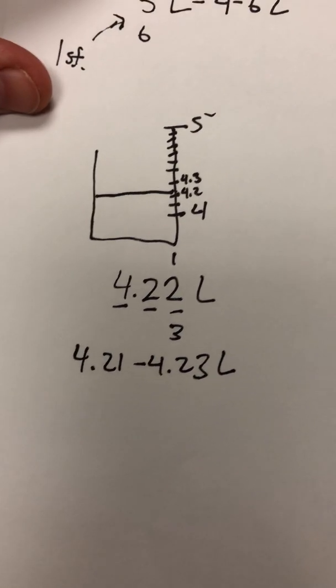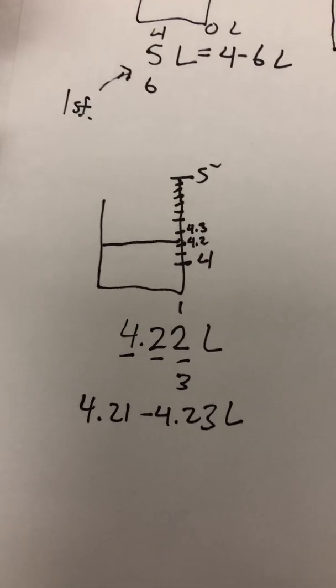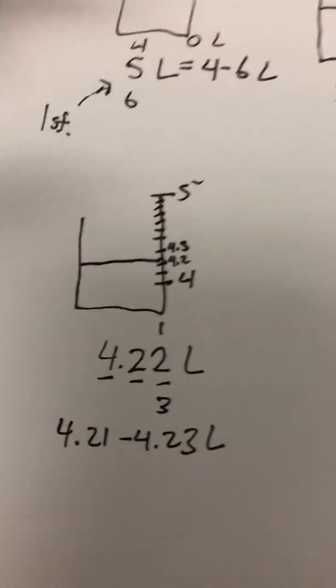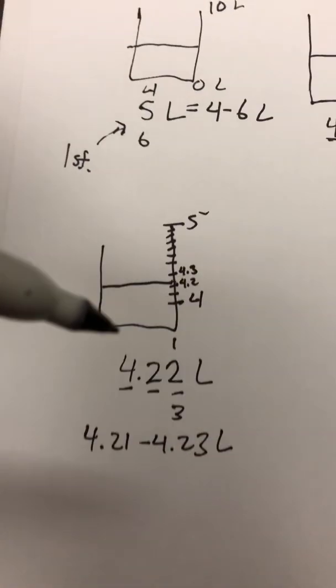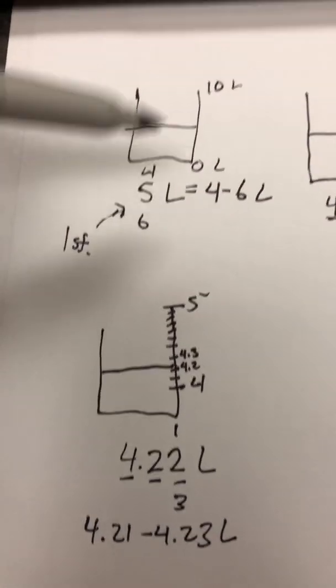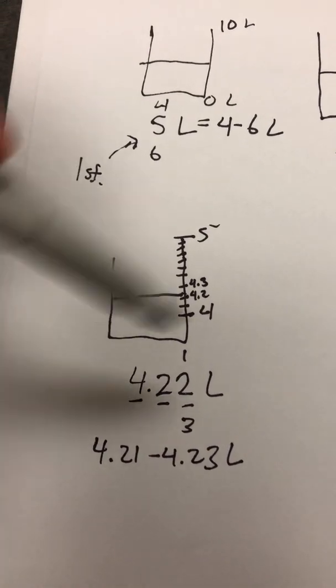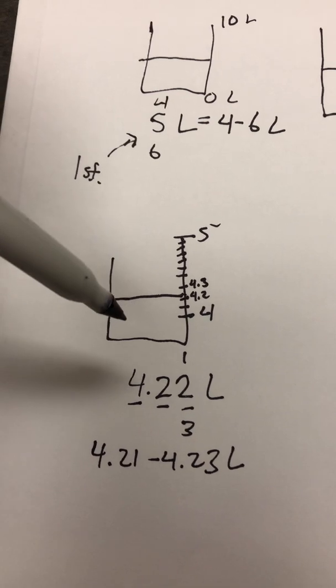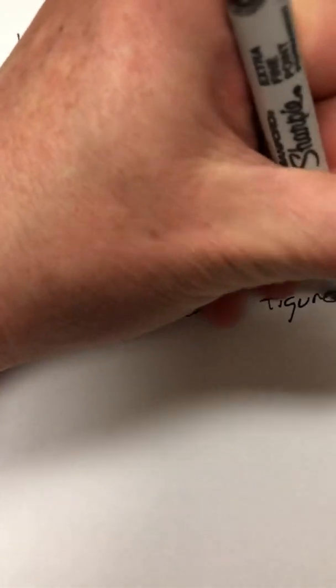If your life depended on it and you absolutely had to get some kind of medicine, and they said you need 4.22 liters of some medicine — which would be a whole lot of medicine — would you trust this one or this one? Would you rather have them measure 5 liters with something like this, or relatively accurately measure 4.22 liters with this? I suspect you'd probably choose this one, and this is why significant figures are significant.